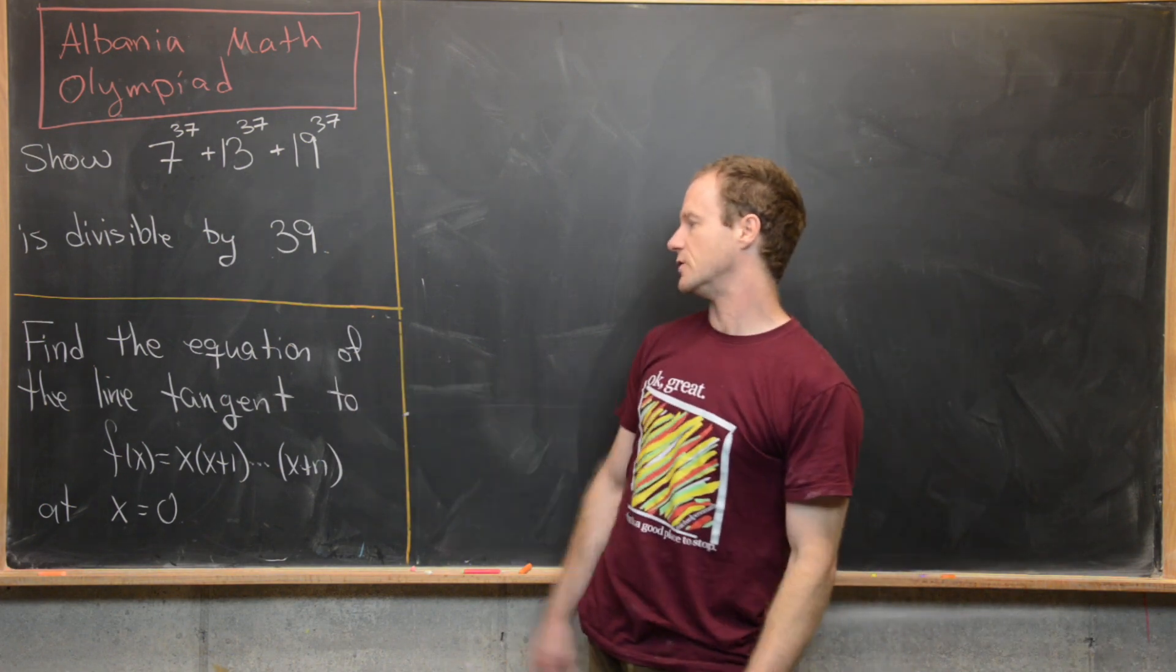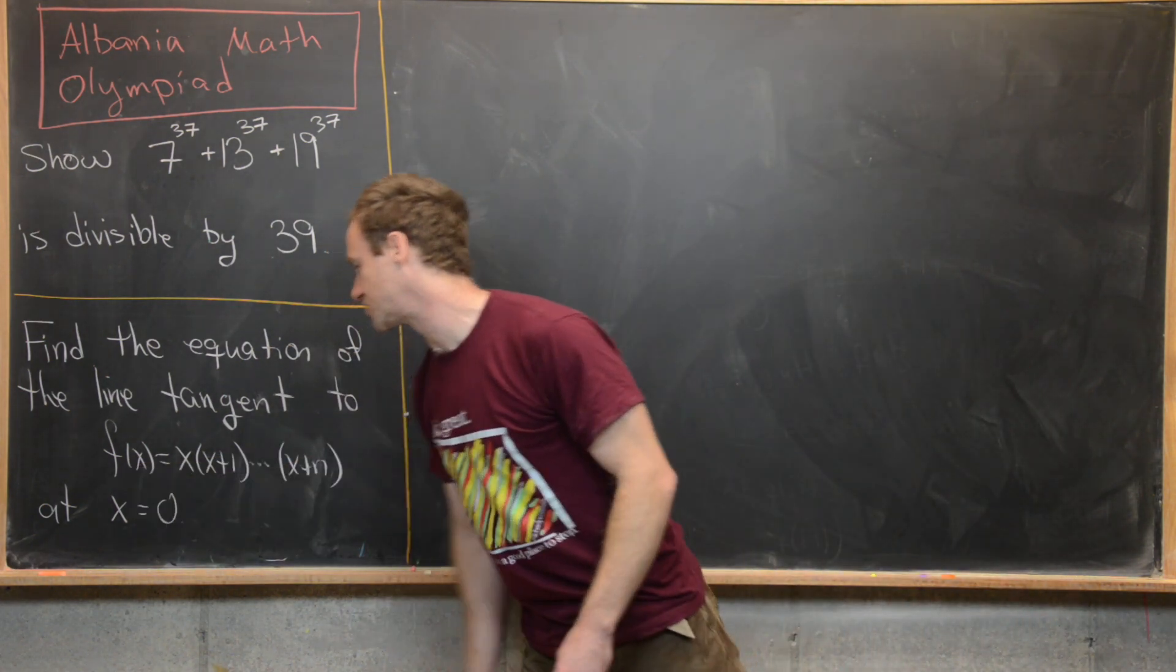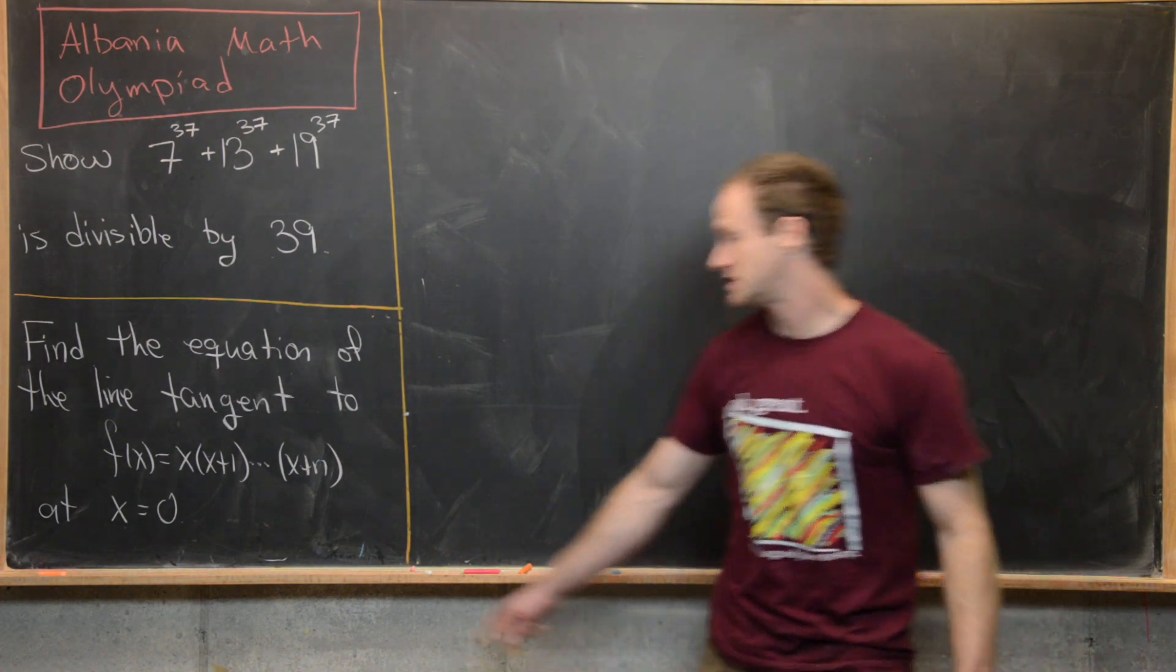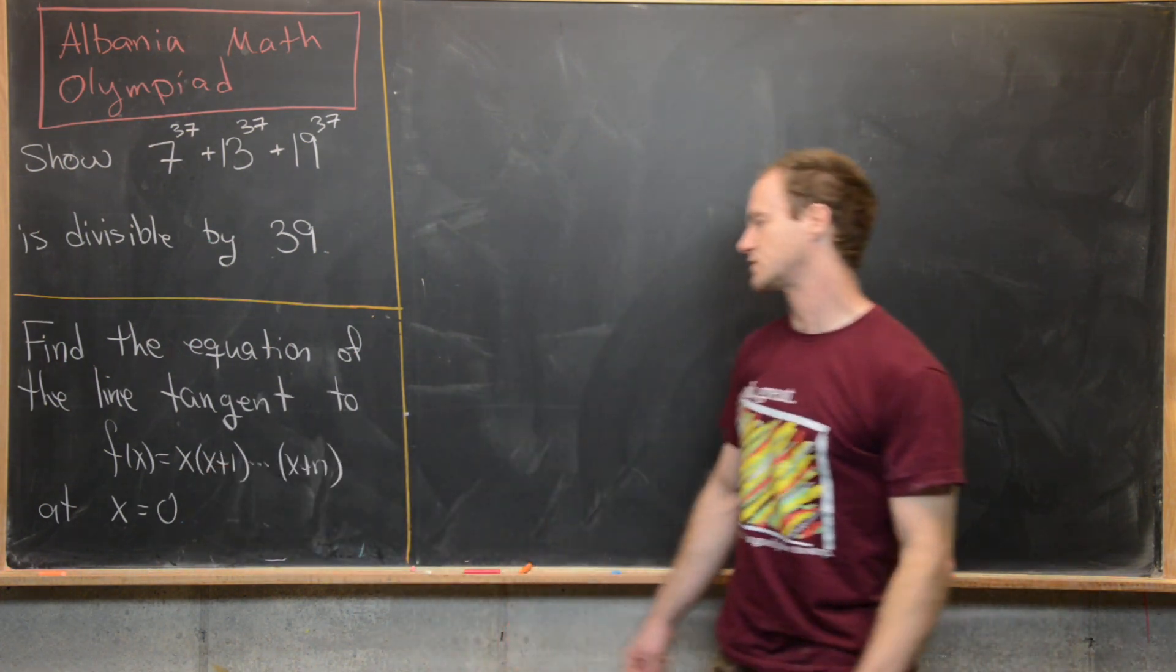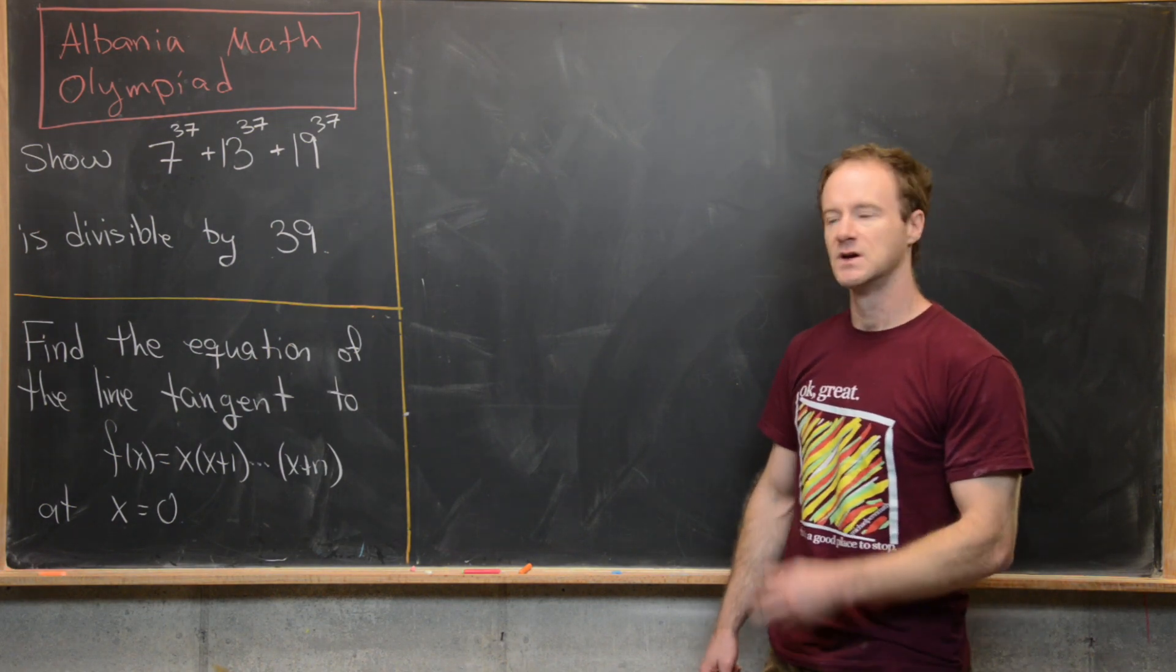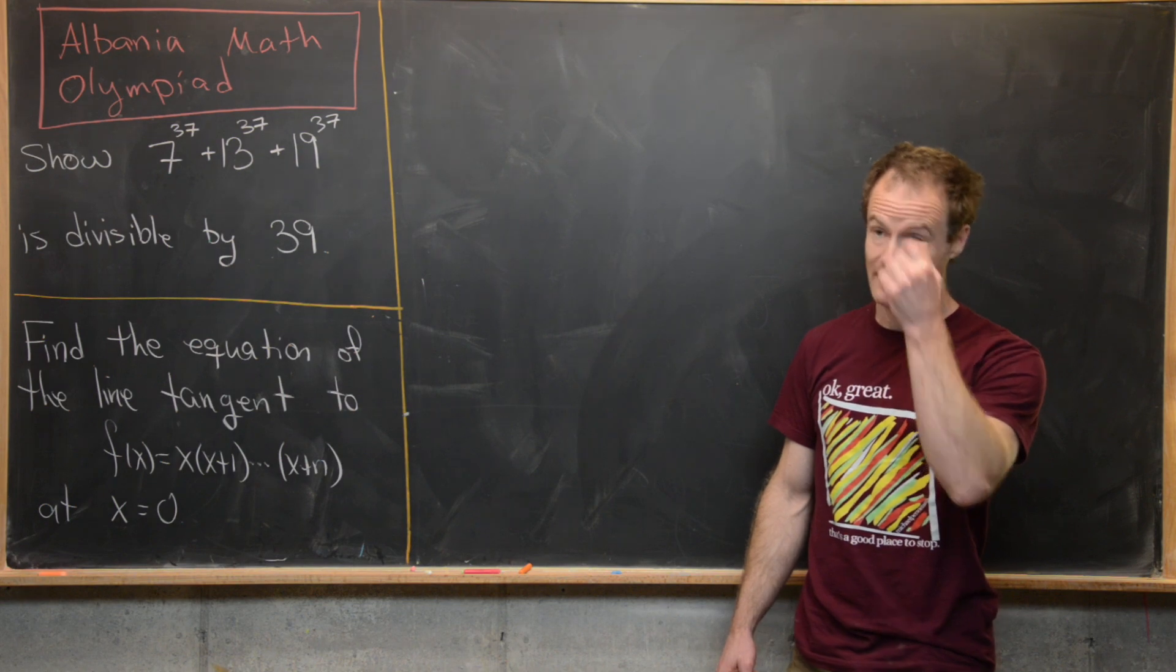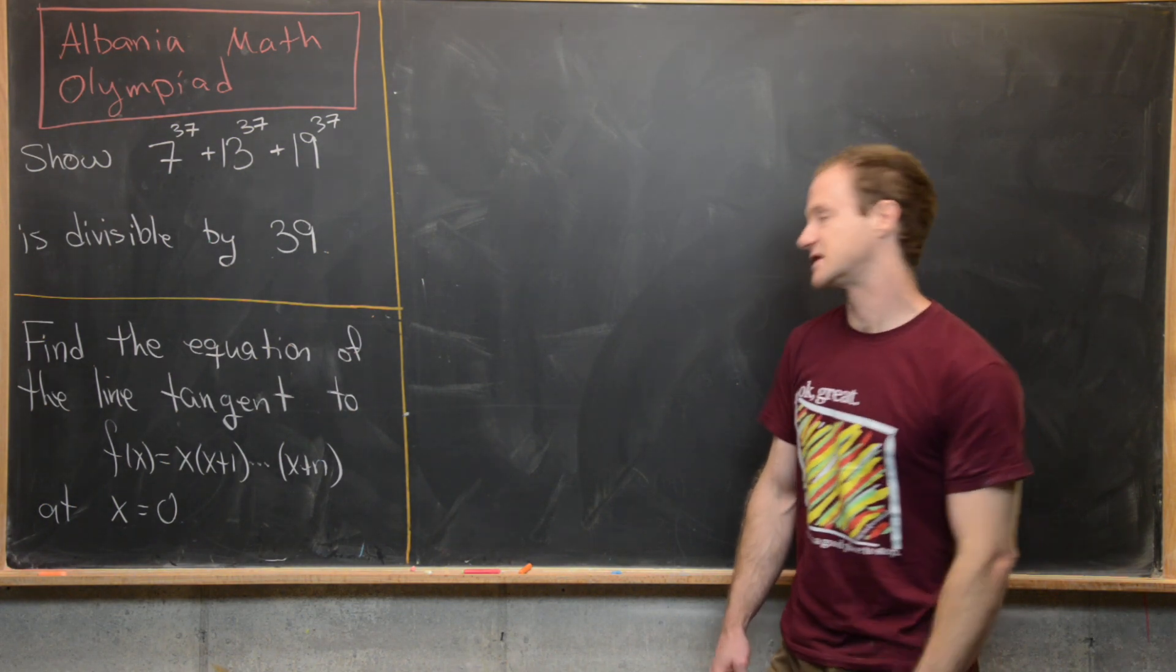So let's see what we want to do. We want to find the equation of the line tangent to this function f(x), which is this product x times (x+1) all the way up to (x+n) at x equals zero. So if we want to find the equation of the tangent line, well, what do we need? We need a point, and we need the slope.